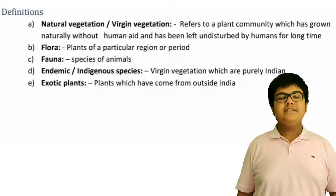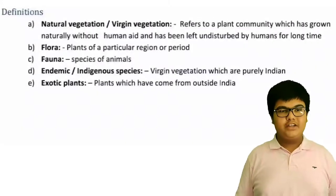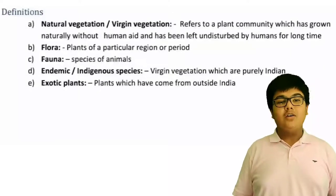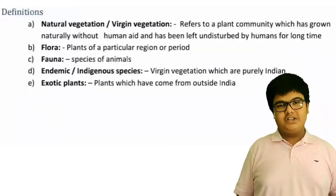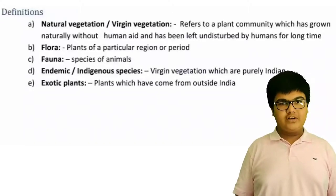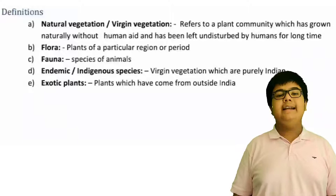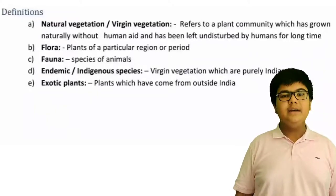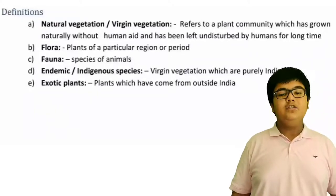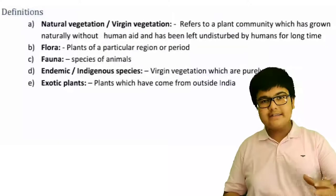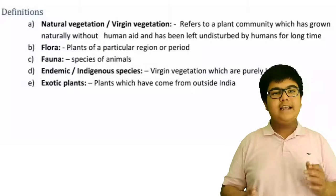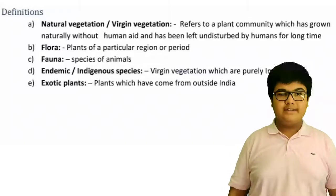Let us learn some basic definitions. First, natural vegetation or virgin vegetation. This refers to a plant community which has grown naturally without human aid and has been left undisturbed by humans for a long time. Natural vegetation refers to plants which have been growing naturally without any human interference.